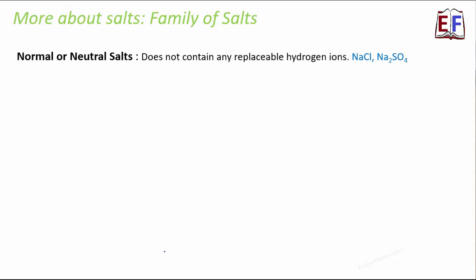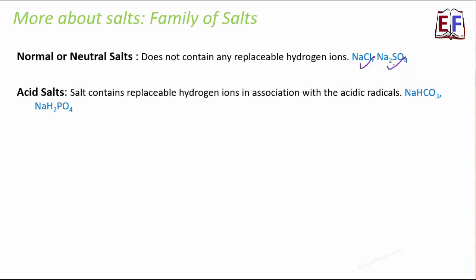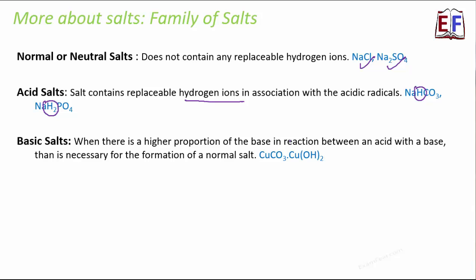First is normal or neutral salts. They do not contain any replaceable hydrogen ions, so that's why they are neutral. For example, NaCl like common salt and Na2SO4. There are acid salts. Whenever the word acid comes, that means they have excess of H plus ions. They have replaceable hydrogen ions in association with the acidic radicals. For example, NaHCO3, NaH2PO4. The presence of this hydrogen ion tells us that they are acid salts. Then we have basic salts. When there is higher proportion of base in the reaction between an acid with the base, then that is necessary for the formation of a normal salt. Basically, when you have more hydroxides, for example, here you have OH. That tells you that this is a basic salt.